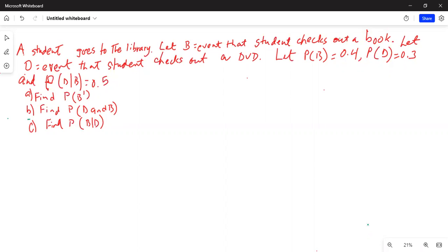Let P(B), probability of B, equal 0.4. Probability of D equals 0.3, and probability of D given B has occurred is 0.5.